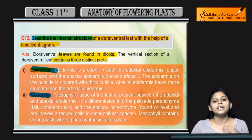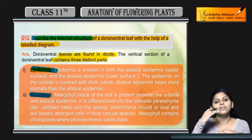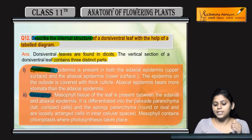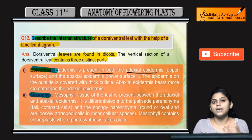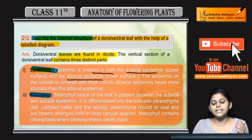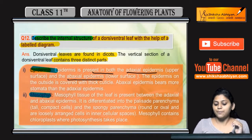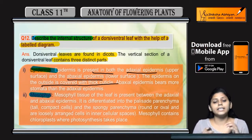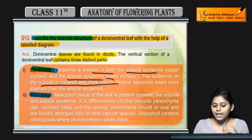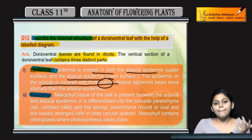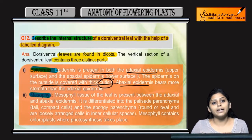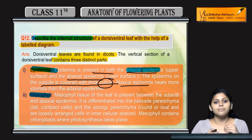Epidermis is the outermost layer, present on both the lower and upper surfaces. Adaxial means upper surface and abaxial means lower surface. Outside the epidermis, a thick layer called the cuticle is present. More stomata are present on the abaxial (lower) epidermis compared to the adaxial epidermis.